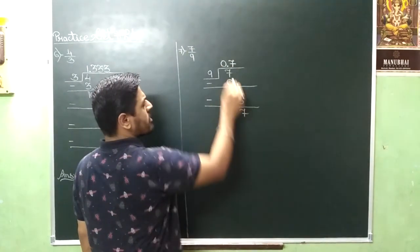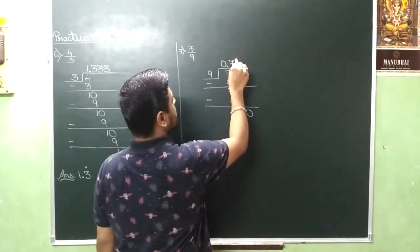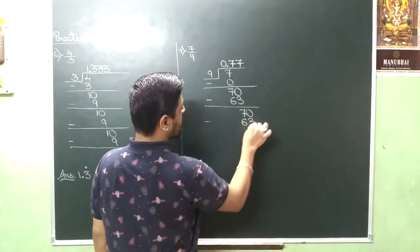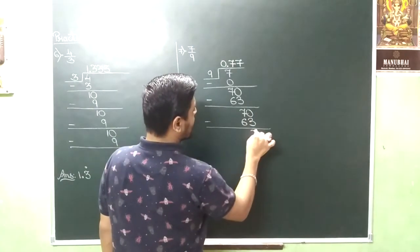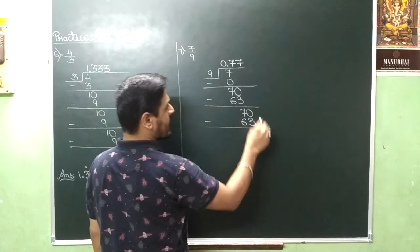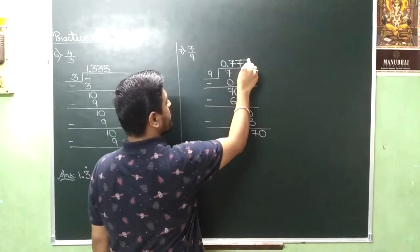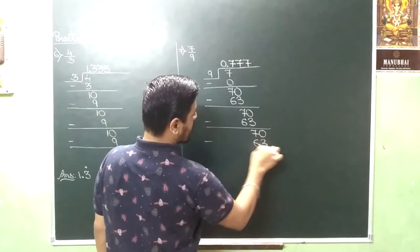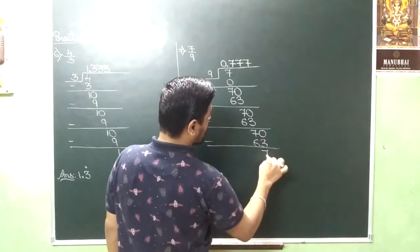Since you have a decimal point, take a 0. 9, 7 is a 63. Remainder will be 7. Since you have a decimal point, take a 0. 9, 7 is a 63. And a 7.